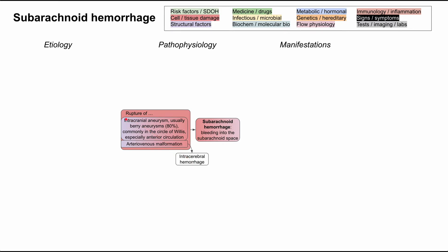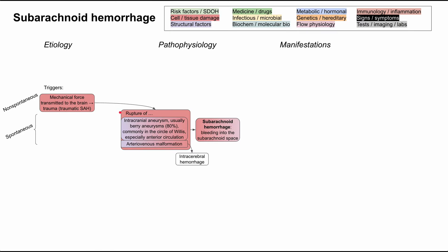There are a number of risk factors and other causes of subarachnoid hemorrhages. We can break down the triggers into non-spontaneous and spontaneous. Non-spontaneous essentially refers to trauma — a mechanical force is transmitted to the brain, causing a traumatic subarachnoid hemorrhage and rupture of an aneurysm or arteriovenous malformation. In spontaneous subarachnoid hemorrhage, something causes an acute increase in blood pressure.